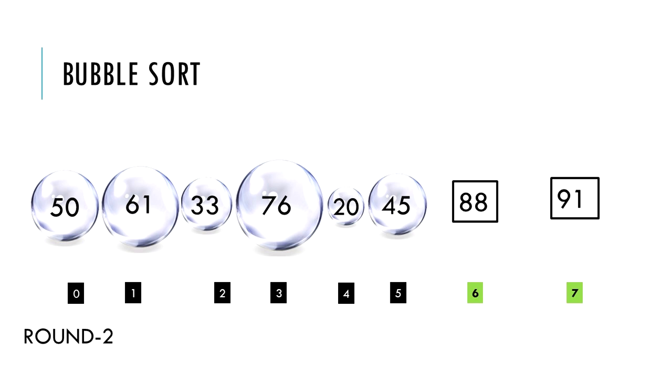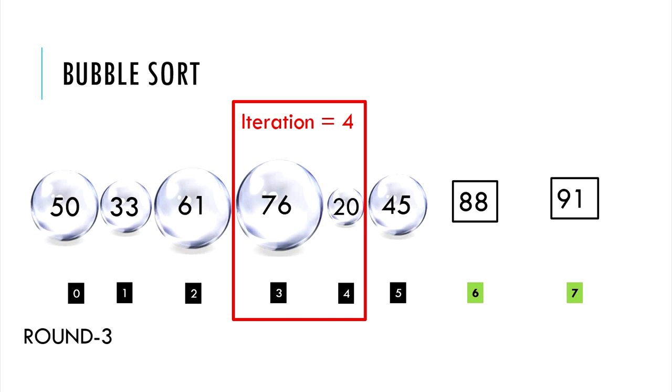Notice how the 6th index has the 2nd largest element and the 7th index has the largest element. In round 3, we require 5 iterations and comparisons to move the next highest number, 76, to index 5.